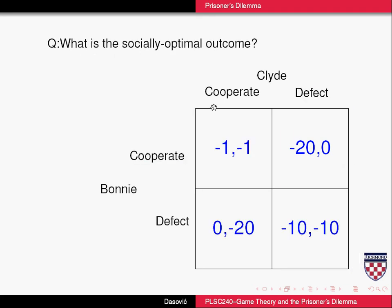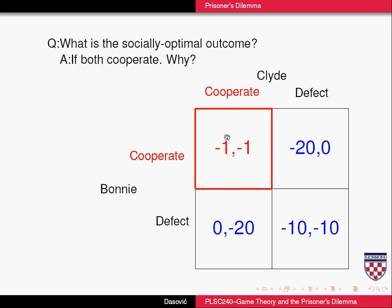What is the socially suboptimal outcome here? From the perspective of society — in this case, just Clyde and Bonnie — where would they like to be? The answer is obvious: they'd like to both cooperate, because that's two years of jail time total rather than 20 years in each of the other three cells. The jail time is distributed differently, which is why they don't end up there, due to the nature of the payoff matrix.